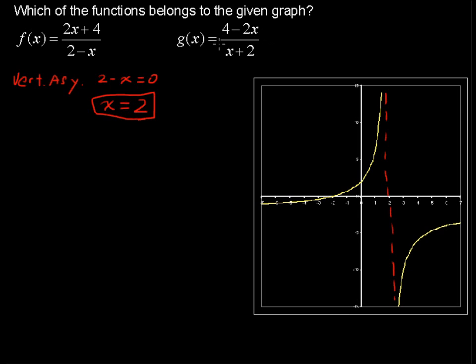I'll do that in blue. Let's see the vertical asymptote when x plus 2 equals 0. Solving that, you get x equals negative 2. So that would be a vertical asymptote over here.